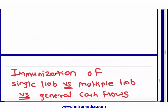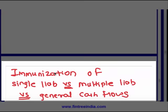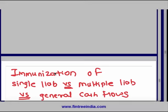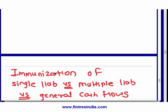For single liability immunization, there are two rules: present value of assets equals present value of liability, and duration of assets equals duration of liability. For multiple liability immunization, there are three rules — the first two are the same, and the third is that the range of distribution of duration of assets must be higher than the range of distribution of duration of liabilities. This provides flexibility and convexity benefits when you have a higher range of asset duration.